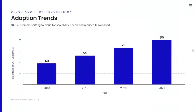Looking at adoption trends: in the past, SAP S/4HANA Cloud was not that popular. Roughly, in 2018 approximately 40% of customers were comfortable with S/4HANA Cloud. By 2019 it moved to 55%, then 70%, then 85%. Now in 2024, almost every other client is ready to move to the cloud and wants to grab the benefits of cloud in their system. The number of clients working on S/4HANA Cloud will definitely be more than on-premise systems, making it very important for us to get updated on ABAP Cloud.